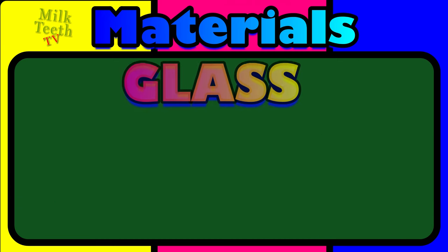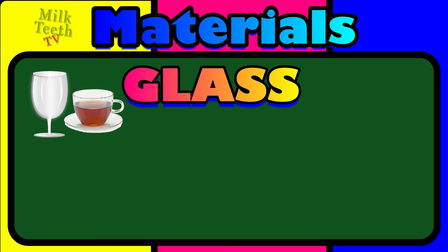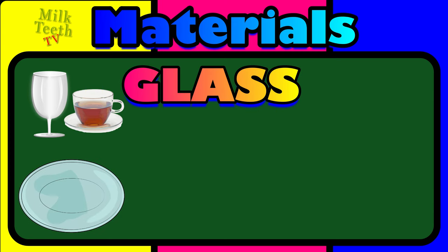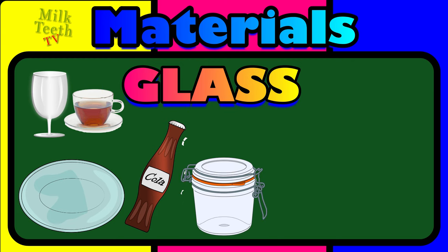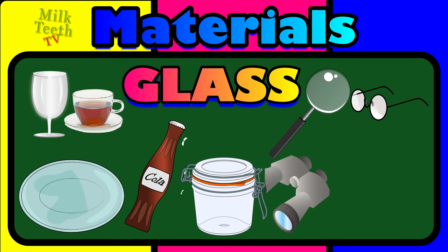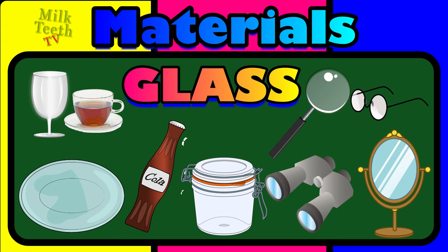Now can you name a few things that are made up of glass around you? Glasses, cups and saucers, plates and dishes, cola bottles, jars and canisters, looking glass, your eyeglasses, the glasses of binoculars, and also the mirror — all are made with glass.